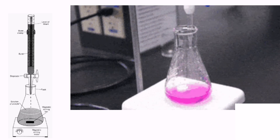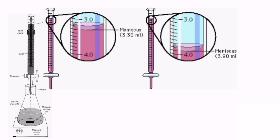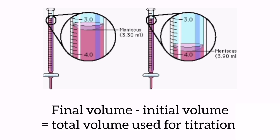Titration proceeds till the solution color turns pink. Note down the volume of potassium hydroxide used during titration by subtracting the initial volume of the burette from the final volume of the burette after the experiment.